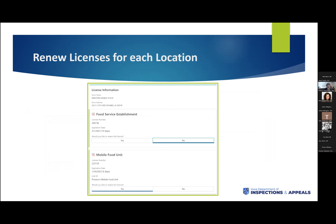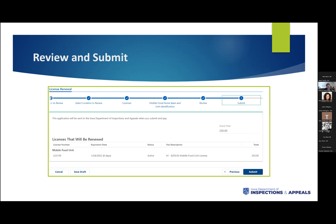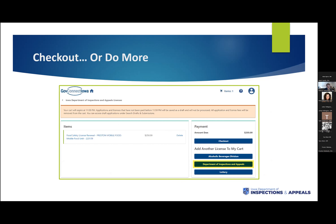In this example, we're going to renew just one license — selecting no on the food service license and yes on the mobile food unit license. That starts the questionnaire portion, collecting basic information needed for this particular license type. Any field with a red asterisk is required and it will not let you proceed without filling those out. As you go through, you'll notice a blue progress bar at the top of the screen. You'll come down to the portion showing the grand total — for a mobile food unit license, it's an annual fee of $250. You can then go to checkout, or you can choose to add another license to your cart.